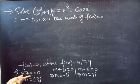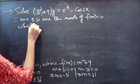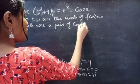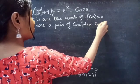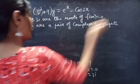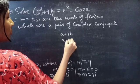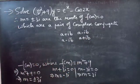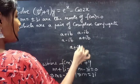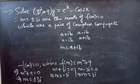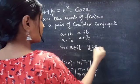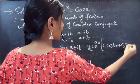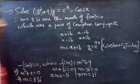The roots m = ±3i are a pair of complex conjugates. If a + ib is a complex number, its conjugate is a − ib, and vice versa. When we have a pair of complex conjugate roots, we write yc = e^(ax)(c₁ cos bx + c₂ sin bx). Let's now write the complementary function.